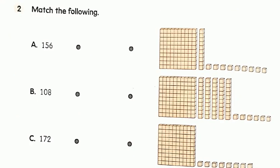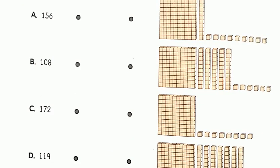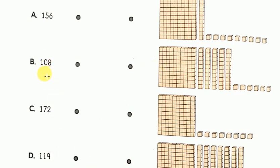Our next question is: match the following. See the numbers on your left side and the place value blocks on your right side. Match the number with the correct place value blocks. The number 156 is a three-digit number. It has 1 hundred block, 5 tens blocks and 6 ones cubes. The second picture has 1 hundred block, 5 tens blocks and 6 ones cubes. So you can match 156 with the second picture.